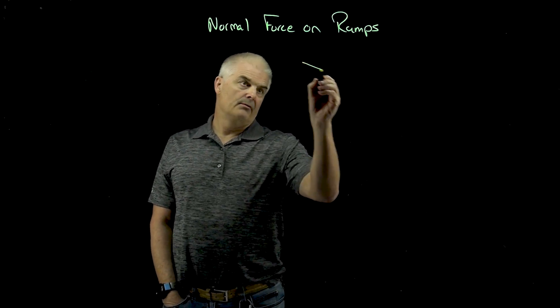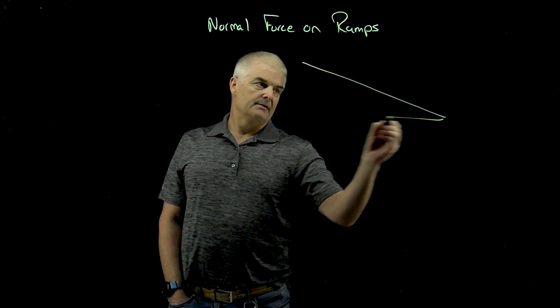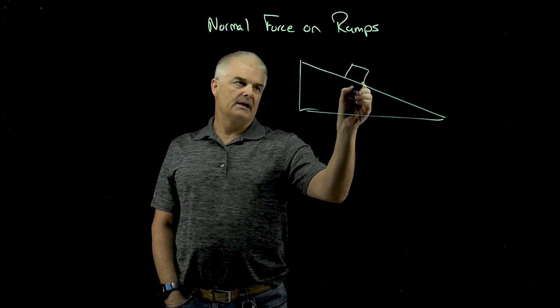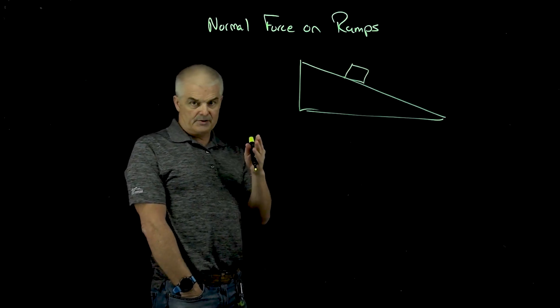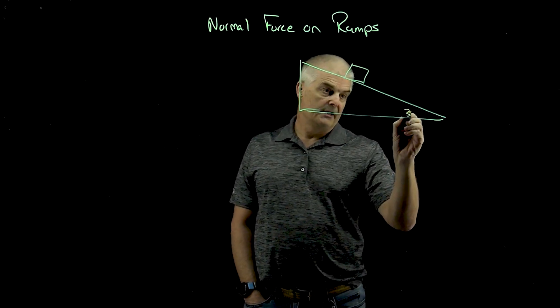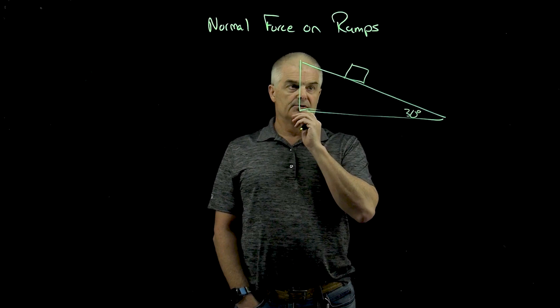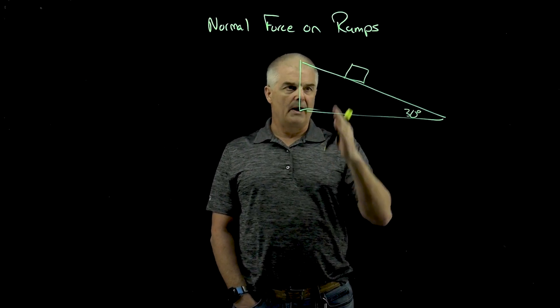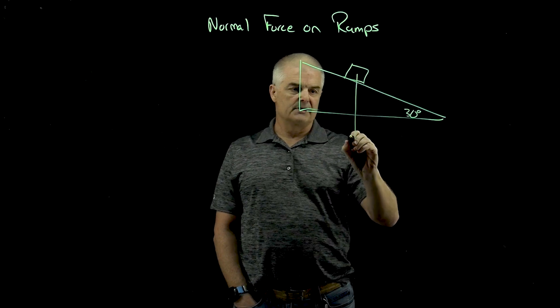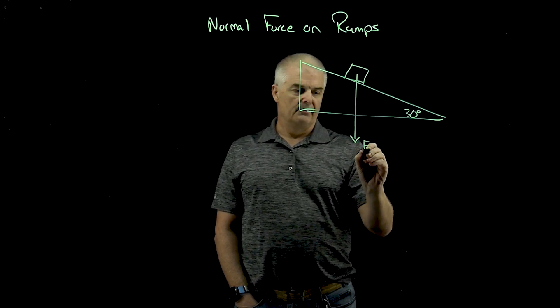So if I have a ramp that looks like this, and I have a box, remember a normal force is a contact force perpendicular to the surface of the contact. And let's say that this is a 30 degree angle. So what is happening? Gravity is always acting on objects. So there's going to be a force downward called the force of gravity.